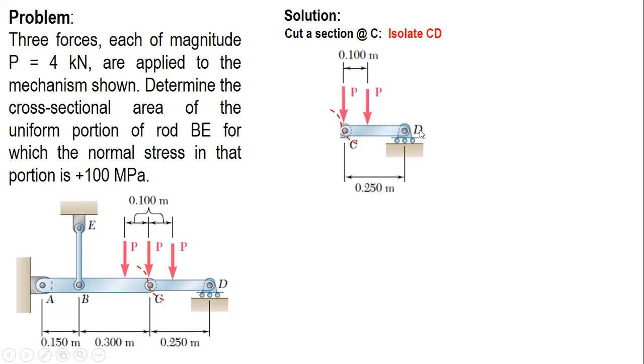So we cut a section at C and we have this cut which isolates CD. CD has D as a roller, so let's have this reaction RD. Next step is we sum up moment about C. Since at C the moment is zero, summation of moment about C, counterclockwise moment positive. One P has zero moment as it passes through point C, while the other P has clockwise moment (negative), and RD has counterclockwise moment (positive).